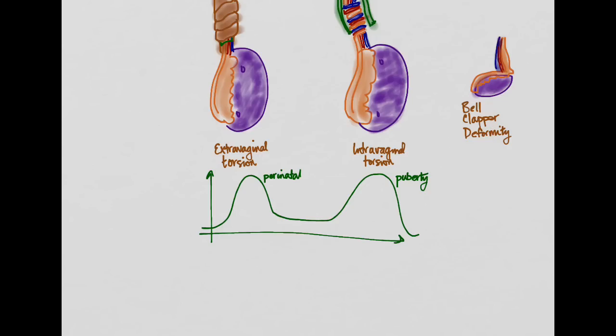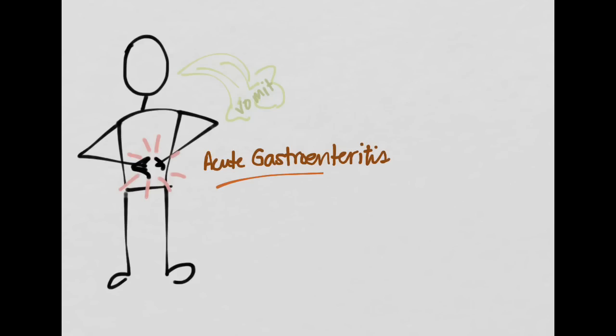So what are you going to see on history with these people? In the puberty age kids, they're usually going to develop a sudden onset of abdominal pain. They might get pain in the belly or pain in the inguinal area, which is referred pain there. They may actually have pain there, and of course have pain in their testicle too. And very often they get vomiting.